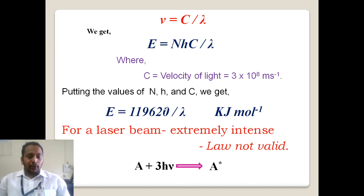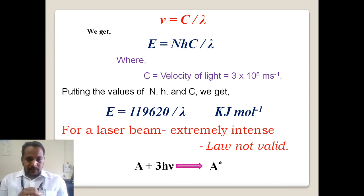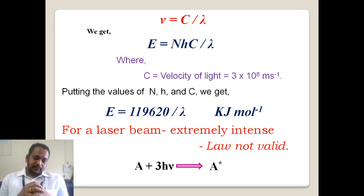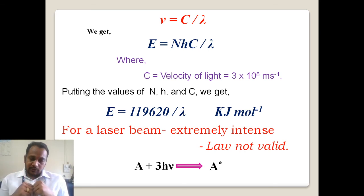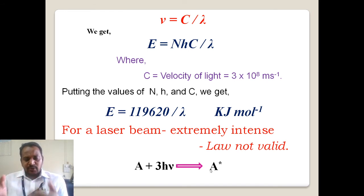The law of photochemical equivalence says that one molecule absorbs one photon. If one molecule absorbs one photon, then the quantum yield of that reaction should be unity — we will discuss quantum yield in the next video. However, this law is not valid for all photochemical reactions. In some photochemical reactions, a single molecule can absorb two or three photons — for example, when using a laser beam, which is a highly intense and energetic source of electromagnetic radiation. For a laser beam, this law is not valid, and one reacting molecule can absorb two or three photons, causing the quantum yield to decrease.